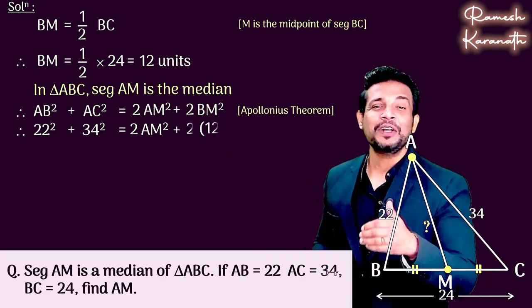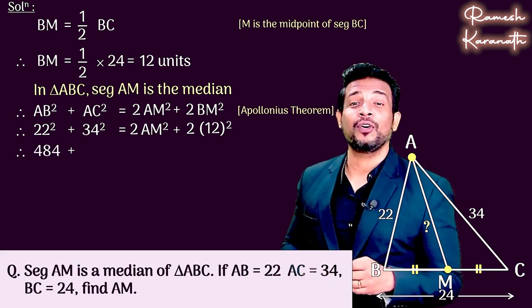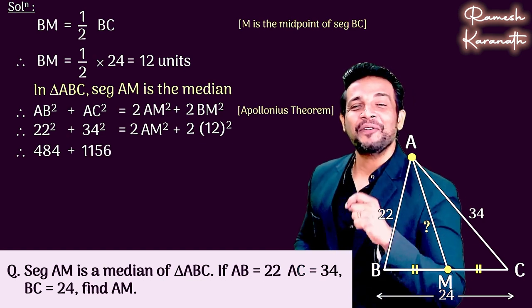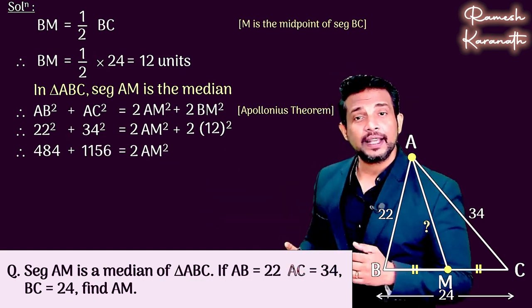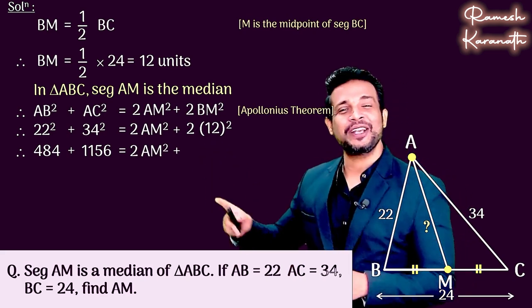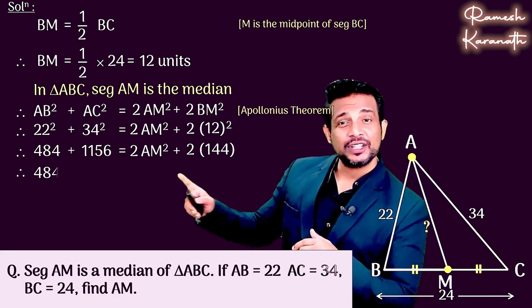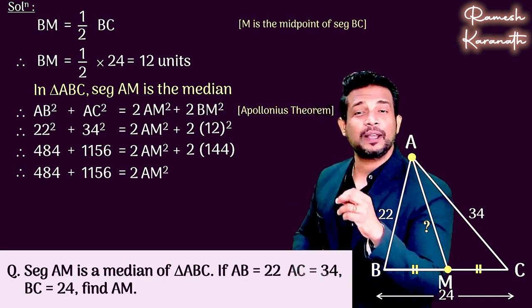So let's solve. Left hand side: 22 square is 484, 34 square multiply 34 into 34, that is 1156. Right hand side: twice of AM square, 12 square is 144, so twice of 144. Next step we simplify. 484 plus 1156 is equal to twice of AM square plus 288.